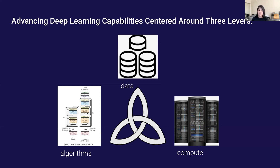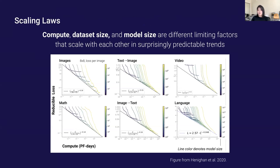The exploration of scaling laws evidence across these three factors has created a way to measure the impact of these three as they interact and limit each other. Scaling laws predict machine learning performance as a function of model size, dataset size, and the amount of compute used for training. You can think of compute, dataset size, and model size as different limiting factors that you can change to get better performance.